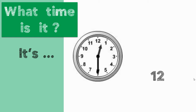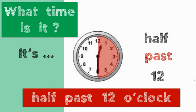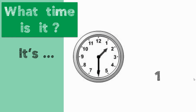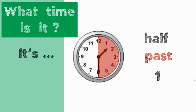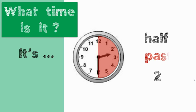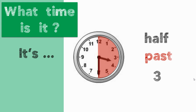This time it's 12 hours and 30 minutes — it's half past twelve. Can we say 'it's half past twelve o'clock'? No, we don't use o'clock with minutes. It's half past twelve. This time it's 1 hour and 30 minutes — it's half past one. This time it's 2 hours and 30 minutes — it's half past two. This time it's 3 hours and 30 minutes — it's half past three.